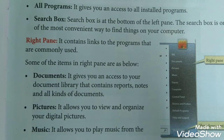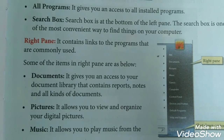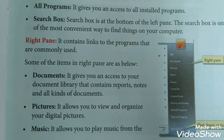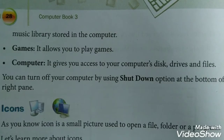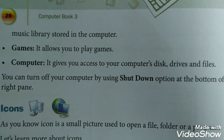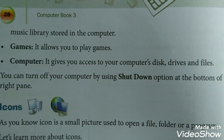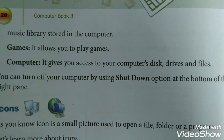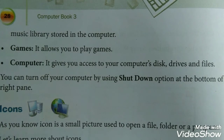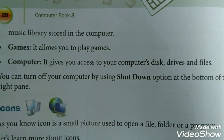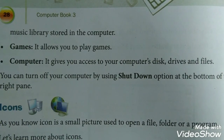Pictures — it allows you to view and organize your digital pictures. Music — it allows you to play music from the music library stored in the computer. Games — it allows you to play games. Computer — it gives you access to your computer's disk, drive, and files. You can also turn off your computer using the shut down option at the bottom of the right pane.